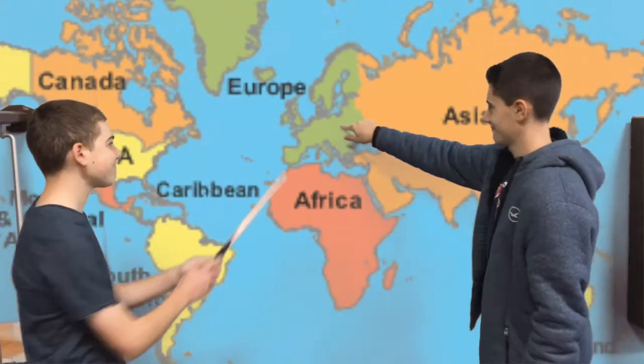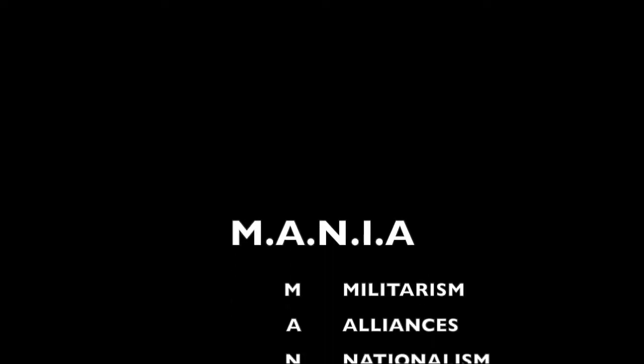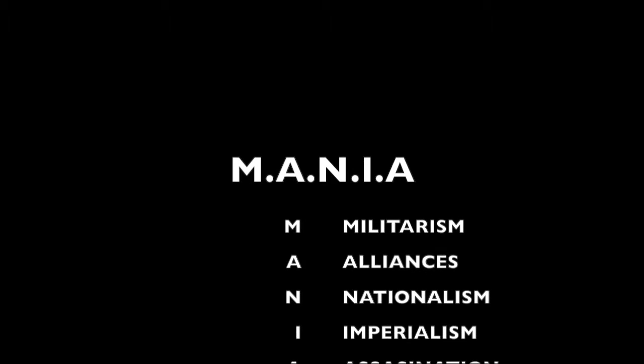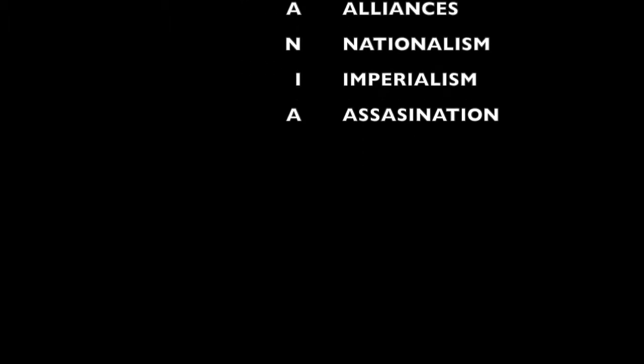Period 7 of U.S. History. Imperialism, which is defined as a policy of extending a country's power and influence through diplomacy or military force, was one of the main causes of World War I, along with militarism, alliances, nationalism, and the assassination of Franz Ferdinand.